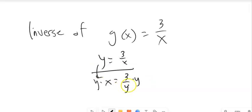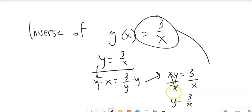xy equals 3. And I'm dividing... I'm sorry. I'm solving for y. So divide both sides by x. And I get y equals 3 over x. This is its own inverse. This thing undoes itself.